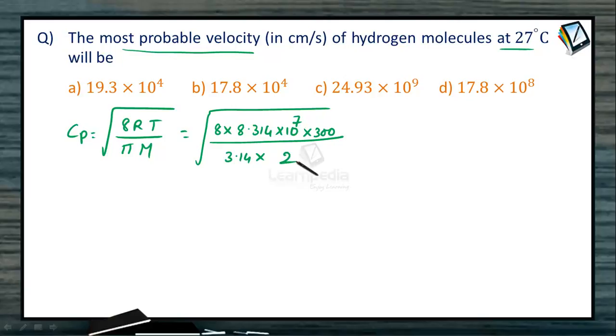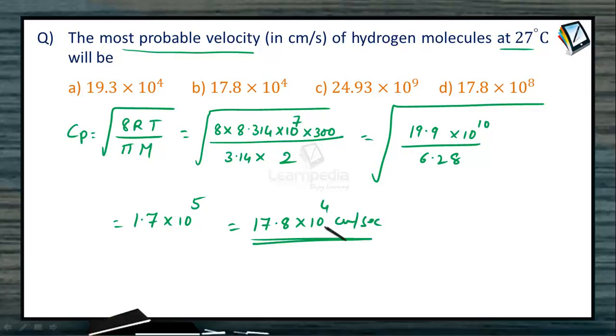So on further solving, we get it as 19.9 into 10 power 10 divided by 6.28. If you consider this one as 6 and this one roughly as 18, it goes 3 times. So root 3 means 1.732 and this becomes 1.7 into 10 power 5. And exactly this is 17.8 into 10 power 4 centimeters per second and that is there in option B.